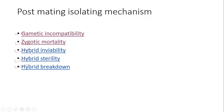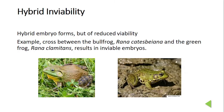Next is hybrid inviability. In hybrid inviability, the hybrid embryo forms but with reduced viability. For example, crossing Rana catesbeiana and the green frog Rana clamitans results in an inviable embryo. The reason for failure to develop is perhaps that interaction of parental genes impairs hybrid development.